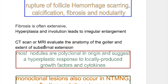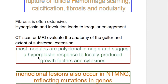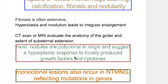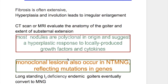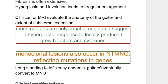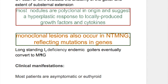Serial CT scan or MRI evaluate the anatomy of the goiter and the extent of substernal extension. Most nodules are polyclonal in origin, suggesting a hyperplastic response to locally produced growth factors and cytokines. Monoclonal lesions also occur in non-toxic multi-nodular goiter, reflecting mutations in genes that lead to specific growth. Long-standing iodine deficiency in endemic goiters eventually converts to multi-nodular goiter.